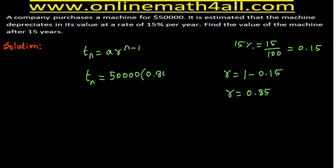So R is equal to 0.85. For all problems on depreciation — not just this particular problem — we subtract the decimal form from 1. Now we have: Tn = 50,000 × 0.85 to the power (n − 1).